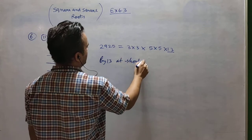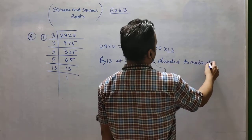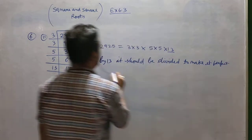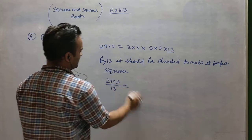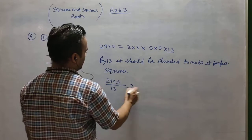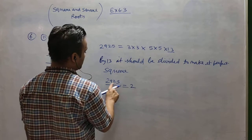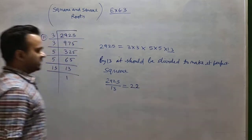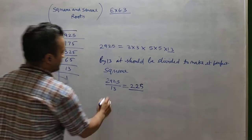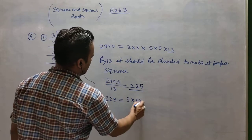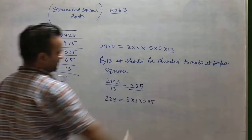2925 divided by 13 gives 225, since 13 is a factor. 225 has factors 3×3 and 5×5 — we have eliminated the 13 — so 225 is a perfect square.